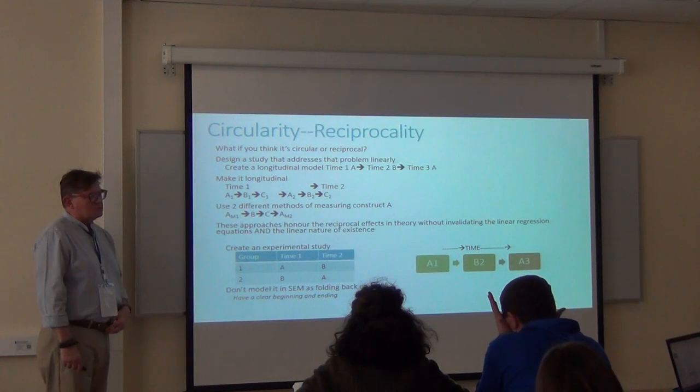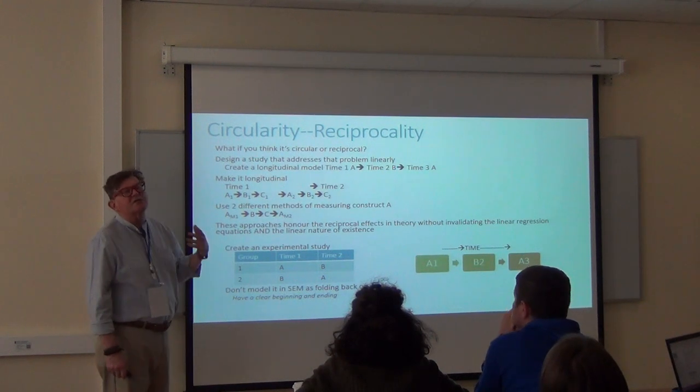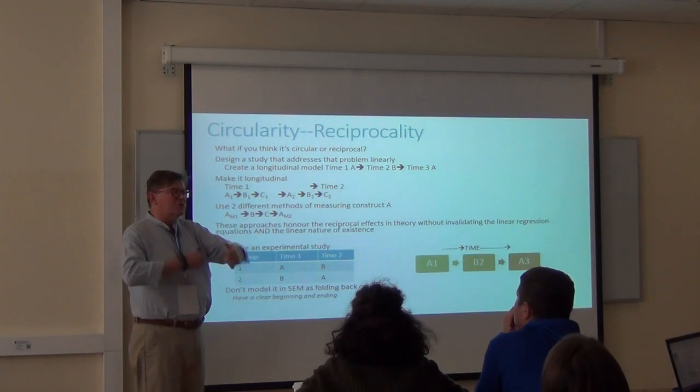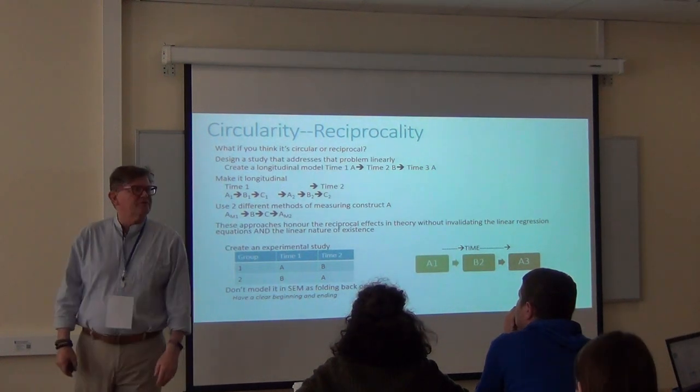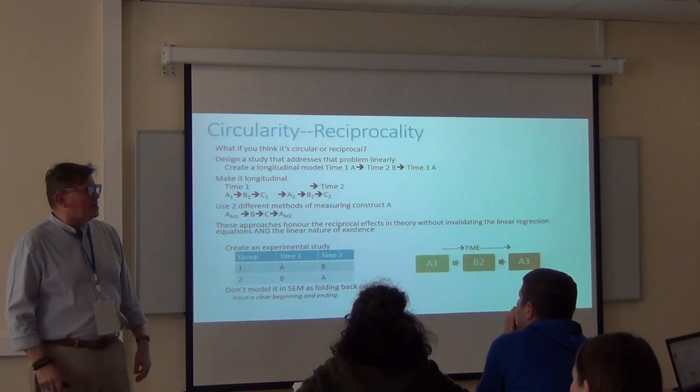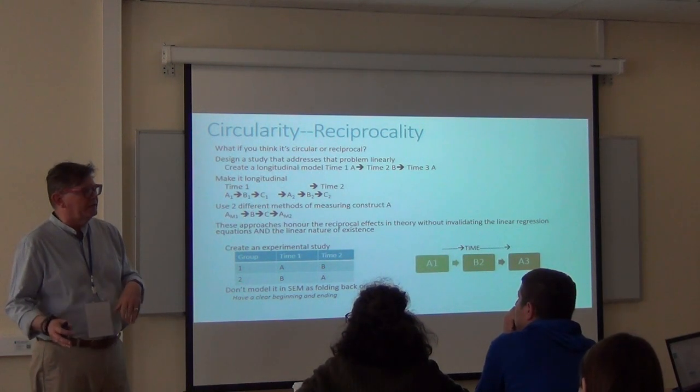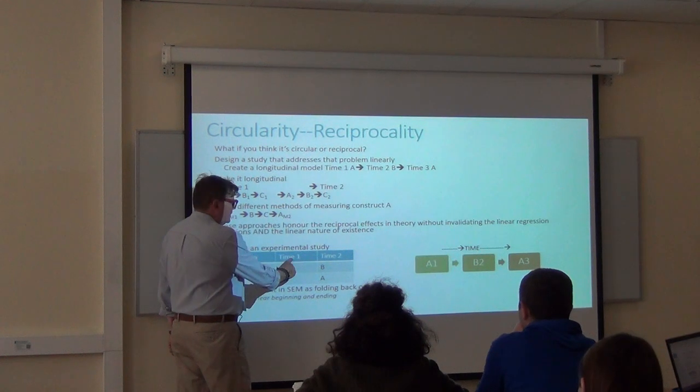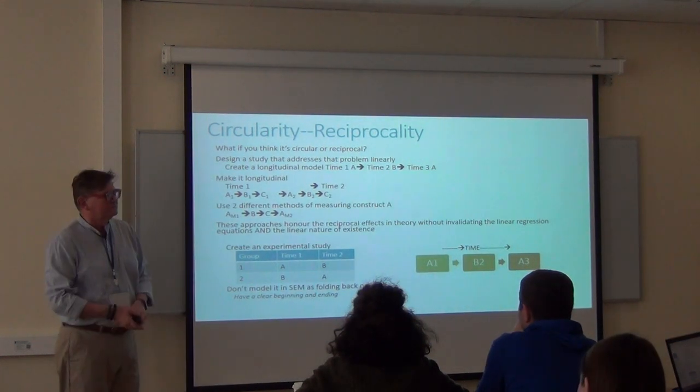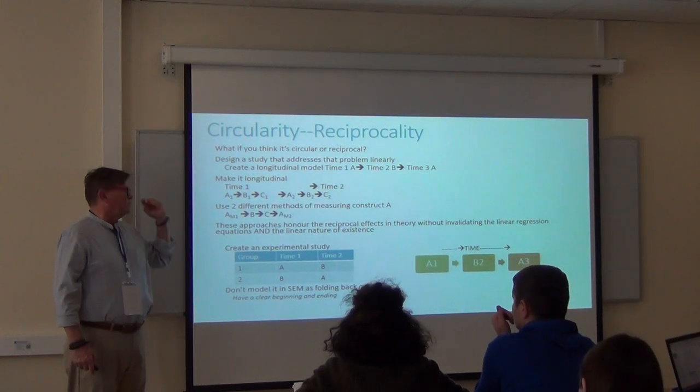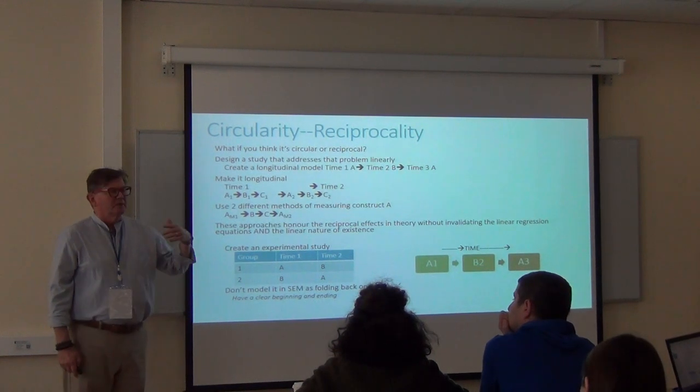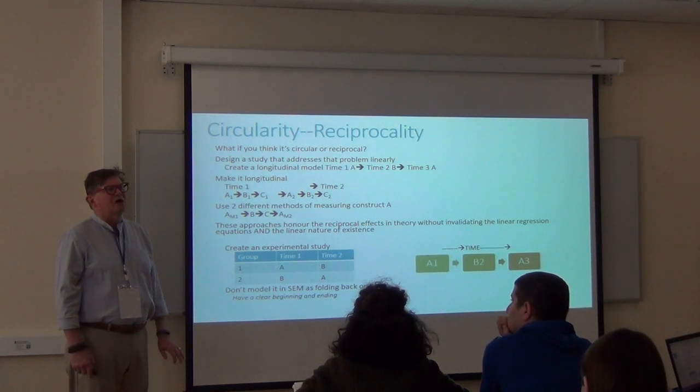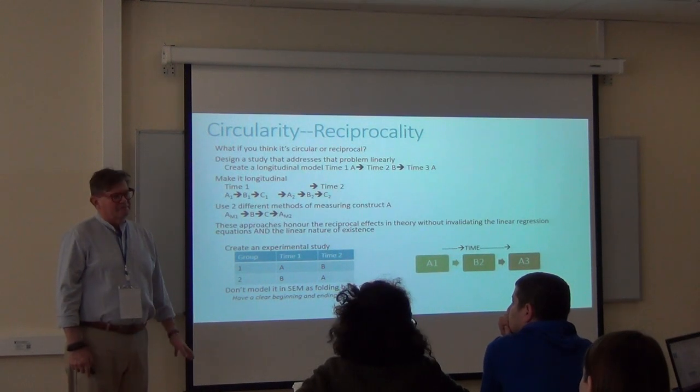You could simply do a quasi-experimental study where at time one, group one gets A and time two gets B, and then we swap them so that no one feels deprived. If B is better than A, why are you not giving me B? Everyone's going to get both treatments and we're going to evaluate the effect. A number of my students have done this kind of design because it's easier to get ethics approval if you say everybody's going to get everything.